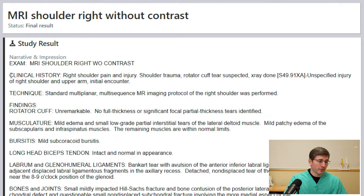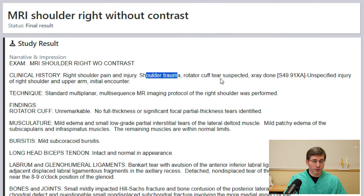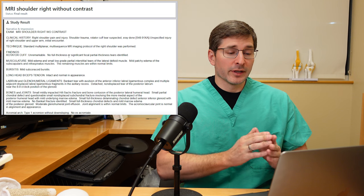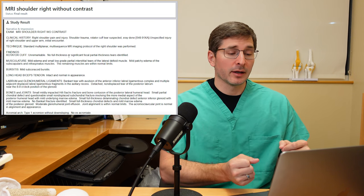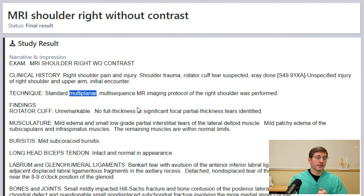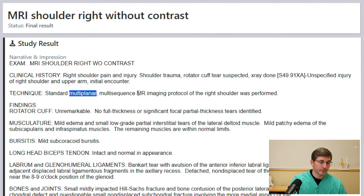Going further down, we reach the clinical history section. This patient had right shoulder pain and shoulder trauma. When the MRI is ordered, they add some rationale for the study. The next topic is technique — they're saying this is a standard multi-planar MRI. What they mean by multi-planar is that the MRI scan is taken from different perspectives on the shoulder, looking at the front, top, and side.